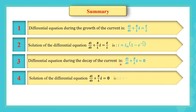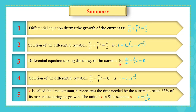The differential equation during the decay of the current is di/dt + (R/L)i = 0. The solution is i = i_max × e^(−t/τ). The time constant τ is the time needed by the current to reach 63% of its maximum value during growth, and the unit of τ is seconds.